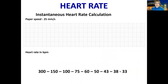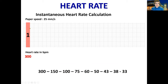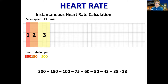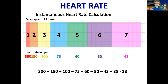Another option to calculate instantaneous heart rate is to memorize specific numbers associated with each interval. Five little boxes — one big box — equals 300 beats per minute. Two big boxes: 150. Three: 100. Four: 75. Five: 60. Six: 50. And seven: 43. If you memorize this sequence — which is used even in human medicine — you can quickly calculate instantaneous heart rate.